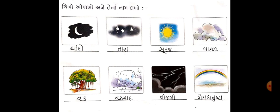તો પ્રથમ ચિત્ર જોઈએ તો પ્રથમ ચિત્ર ચાંદાનું છે, એનું નામ લખવાનું છે. ત્યાર પછીનું ચિત્ર છે તારા. ત્યાર પછી ત્રીજું ચિત્ર સૂરજનું છે. ત્યાર પછીના ચિત્રમાં વાદળ દેખાય છે.